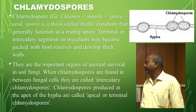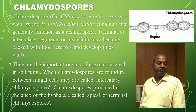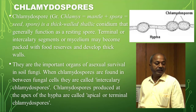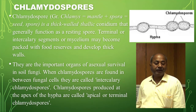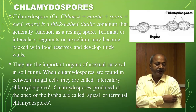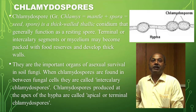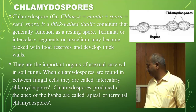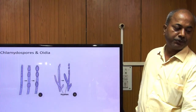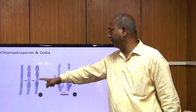Chlamydospores are thick-walled thallic conidia that generally function as resting spores. Terminal or intercalary segments of mycelium may become packed with food reserves and develop thick walls. They are important organs of survival for soil fungi. When chlamydospores are found between the fungal cells, they are called intercalary chlamydospores. Chlamydospores produced at the apex are known as apical or terminal chlamydospores.